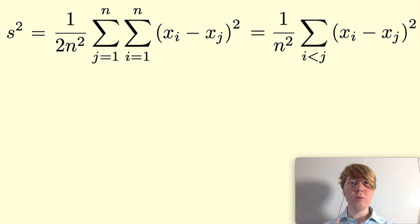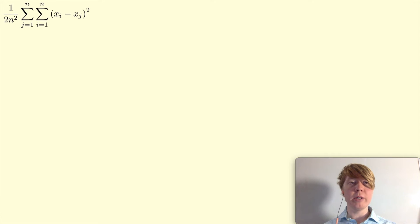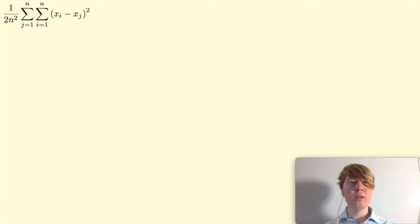We'll start off with the one on the left — we'll show that that's also equal to the sample variance, and then we'll finish by showing that that's equivalent to the one on the right. The method of proof we're going to use is we'll start with the double summation and then show that this is equivalent to the sample variance. You could prove it in the other direction; I just think this way is the most straightforward to follow.